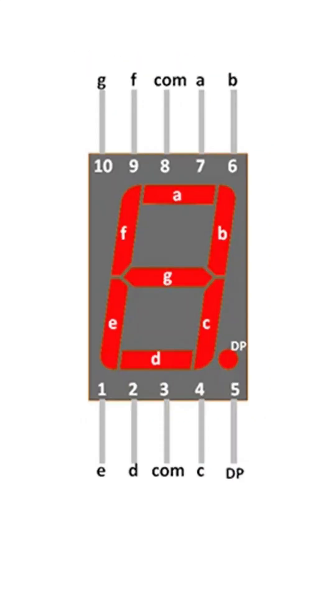How to connect it? Common pins connect to ground for cathode or 5V for anode. Each segment pin goes to an Arduino digital pin through a 220 ohm resistor.